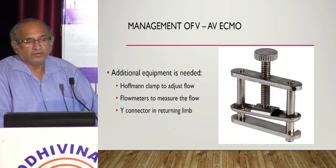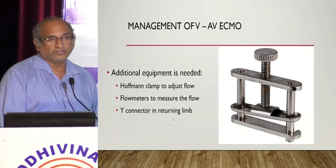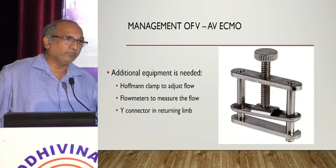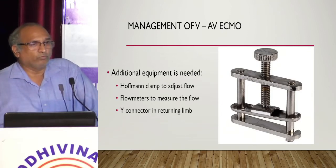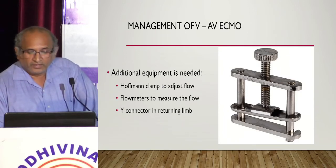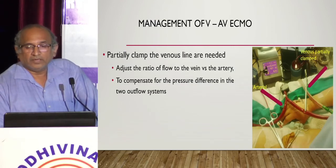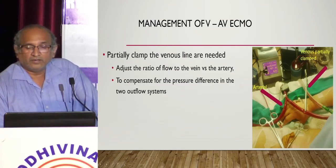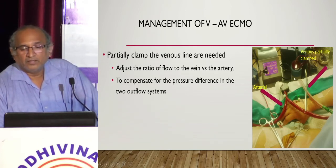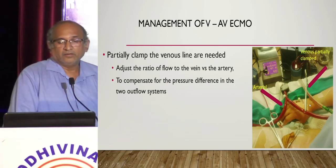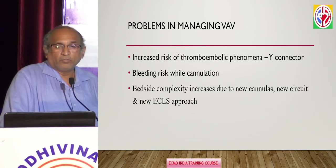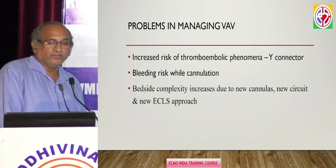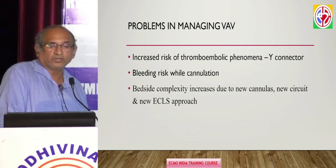When managing VA-V, you need to control flow on the venous side because venous resistance is low and blood always moves to areas of lower resistance. You have to partially clamp the venous part; otherwise, more flow goes to the vein and flow to the artery decreases. You use a Y connector in the arterial line — one limb goes to the femoral artery and the second to the jugular vein, which is partially clamped to give less flow to the vein and more to the artery. Heparin requirements increase, requiring higher ACT. Problems include increased thromboembolic risk, bleeding risk, and increased bedside complexity.